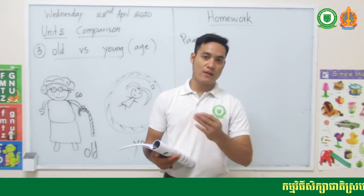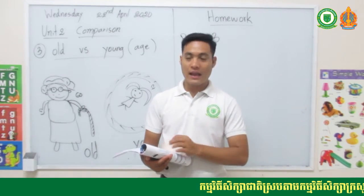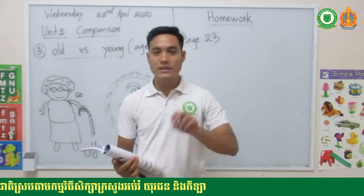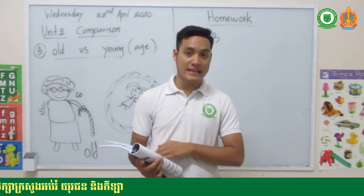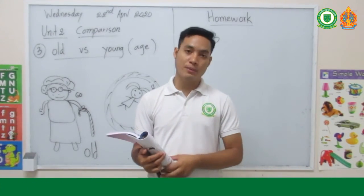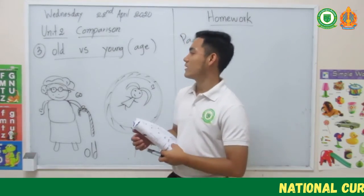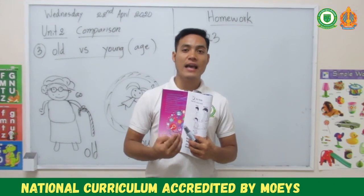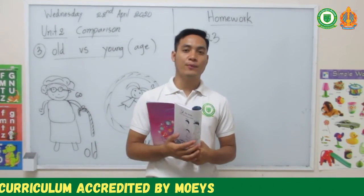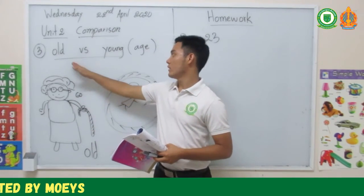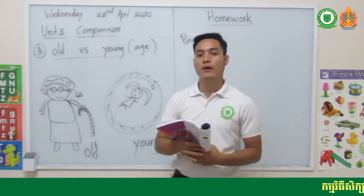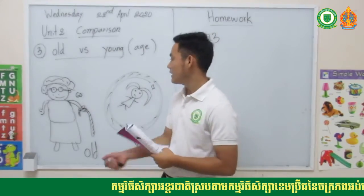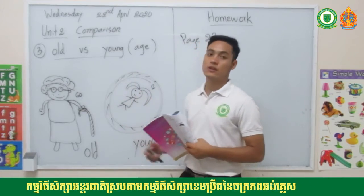You learned about comparison using the words tall, short, fat, thin, old, and young. Use tall and short to compare the height of two things or people. Use fat and thin to compare the size of two things or people. Use old and young to compare the age of two things or people.